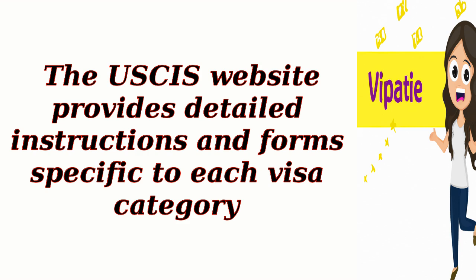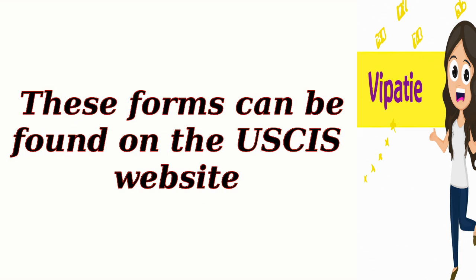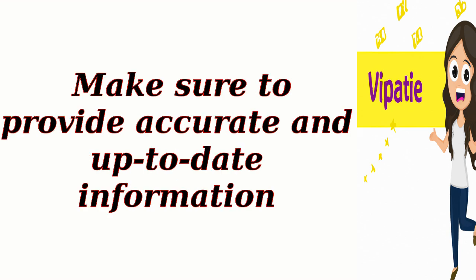Step 3: Complete the necessary forms. Fill out the required USCIS forms for your visa extension. These forms can be found on the USCIS website. Make sure to provide accurate and up-to-date information.